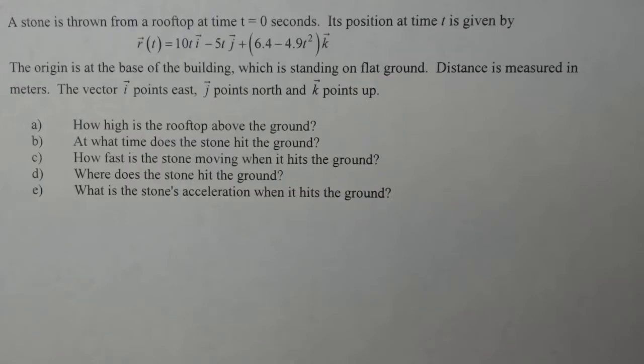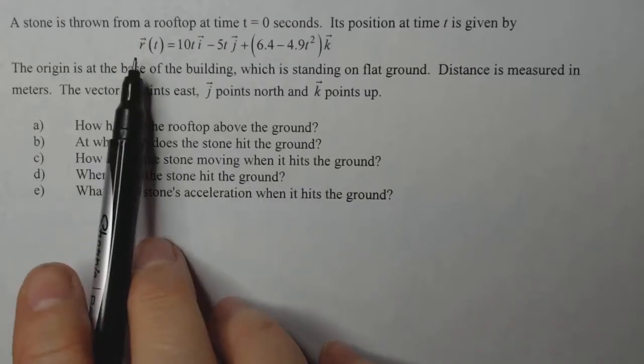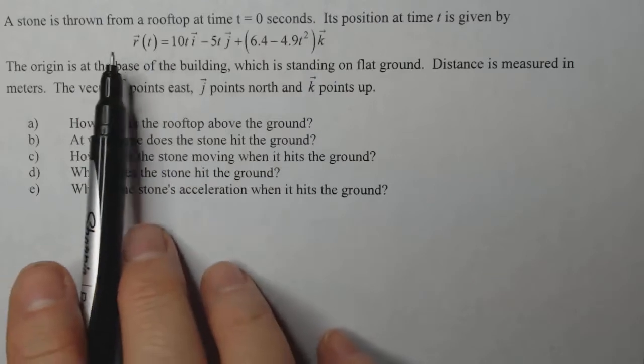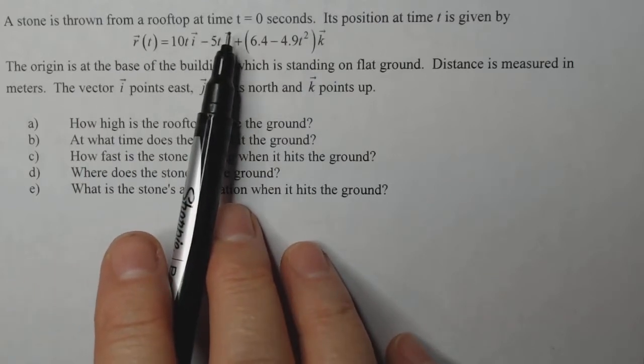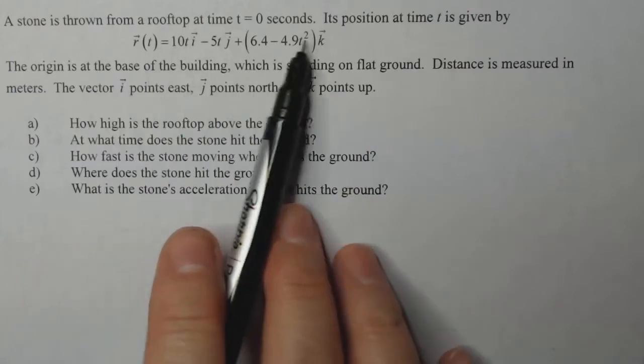This is another problem about derivatives and acceleration in relation to the position vector value function. In this situation, a stone is thrown from a rooftop at time t equals zero seconds. Its position at time t is given by this function.